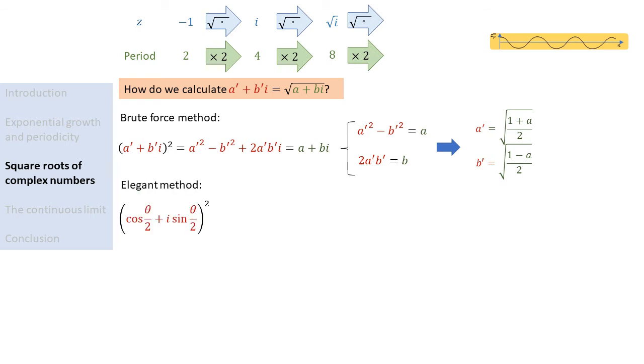If we write the real part and imaginary part of the complex number as the cosine and sine of half an angle, then writing out the square and applying the double angle formula reveals that we have simply doubled the angle. Therefore, if we write a complex number by using an angle theta, then to take square roots, we simply have to half the angle.